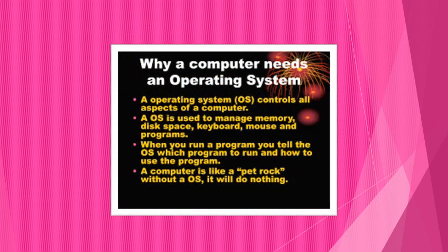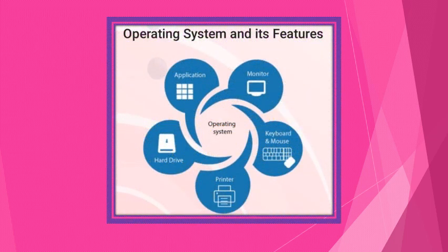Now, what is the need of an operating system? Our operating system controls all aspects of a computer. The OS is used to manage memory, disk space, keyboard, mouse, and programs. When you run a program, you tell the OS which program to run and how to use it, because a computer is just like a machine — it cannot perform any task without instructions. Operating system features include resource management, memory management, storage management, and many different tasks.